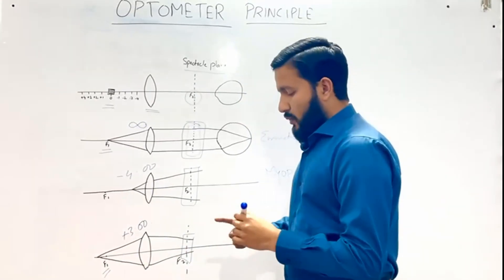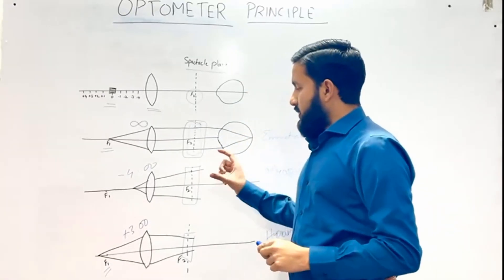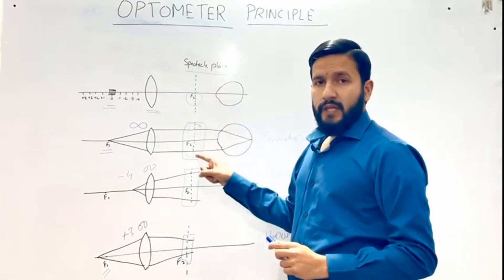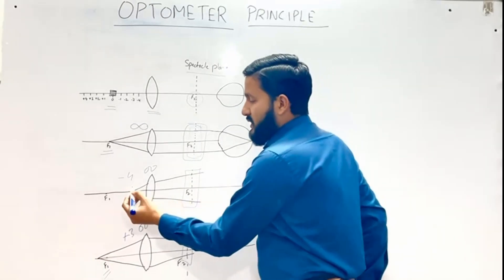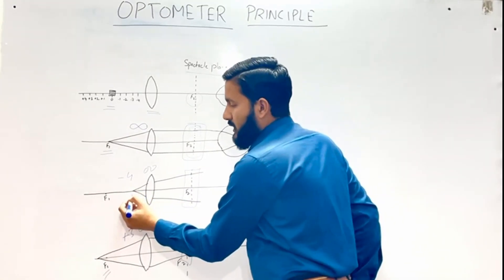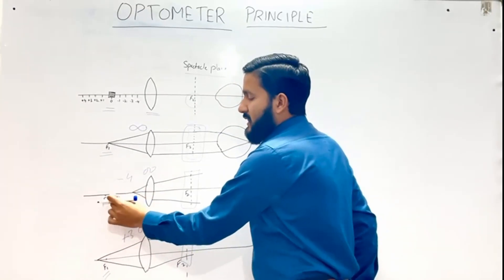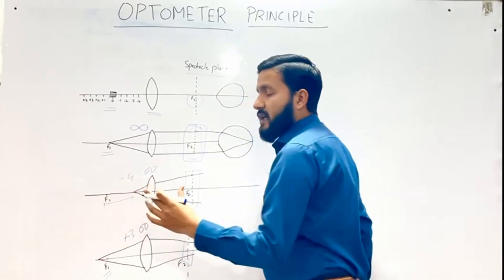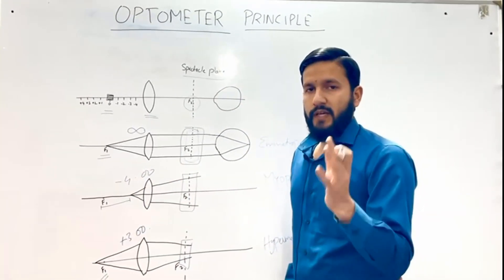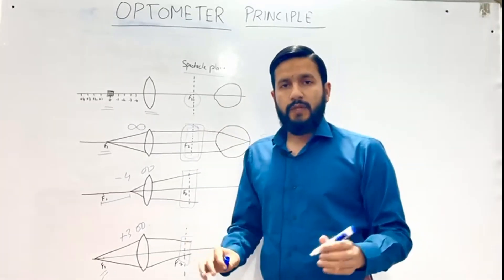To conclude, the divergence of light rays at the spectacle plane depends upon the position of the target relative to the first principal focus of the convex lens. The greater this difference, the greater the refractive error. This is the Optometer Principle.